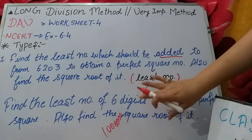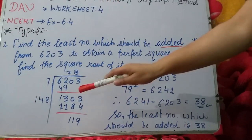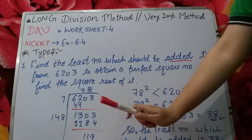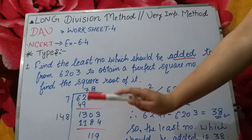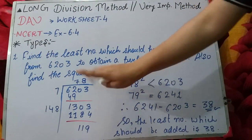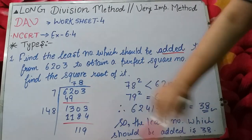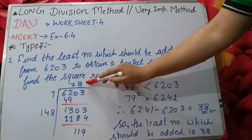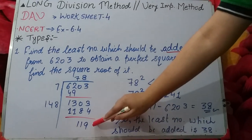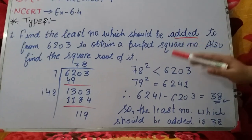What do we do in the added method? The first step is long division. I have made a video, you can refer to it. After performing long division, your quotient is 78 and the remainder is 119. The remainder is not zero. When the remainder is zero, the quotient is the square root. But here remainder is 119, which means 78² is smaller than the given number.